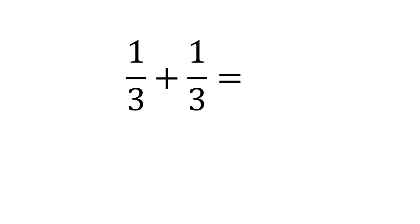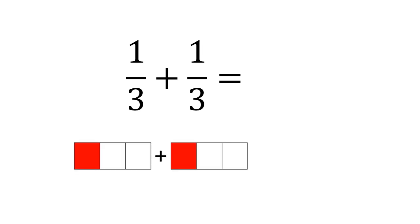We'll start off with our easiest example: one third add one third. In this example, the denominators — that's the numbers on the bottom, the threes — are exactly the same. If we look at what happens in a picture, we've got a third and a third. Both rectangles have one part out of three coloured in. If we brought those red bits together, we'd have two of them — two thirds.